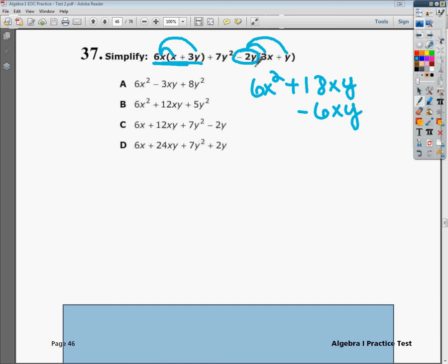Then I do negative 2y times y, which is negative 2y². So I've distributed to everybody, and I also got to go back up here and see if I'm leaving anybody behind, because you never leave a man behind. And I got a 7y².